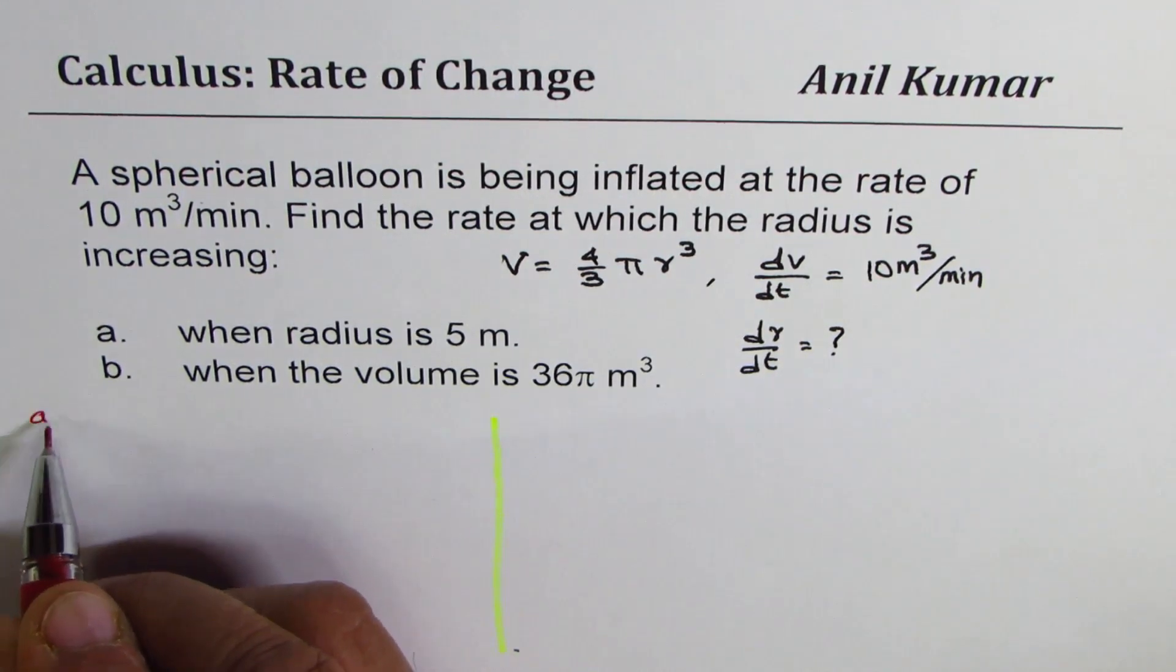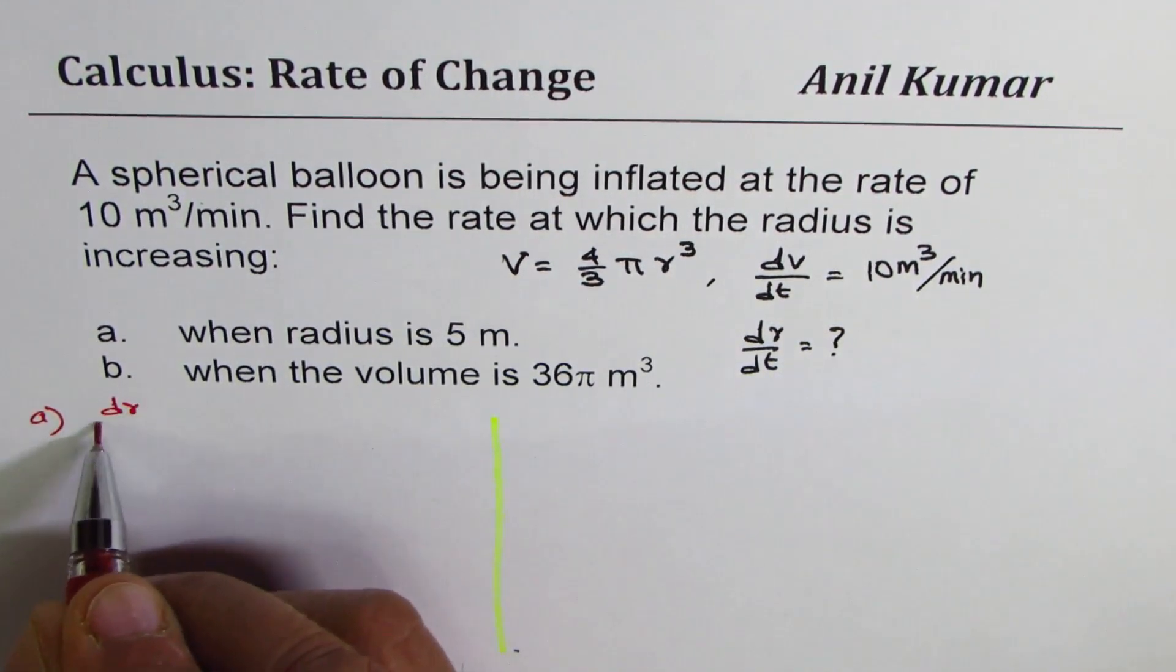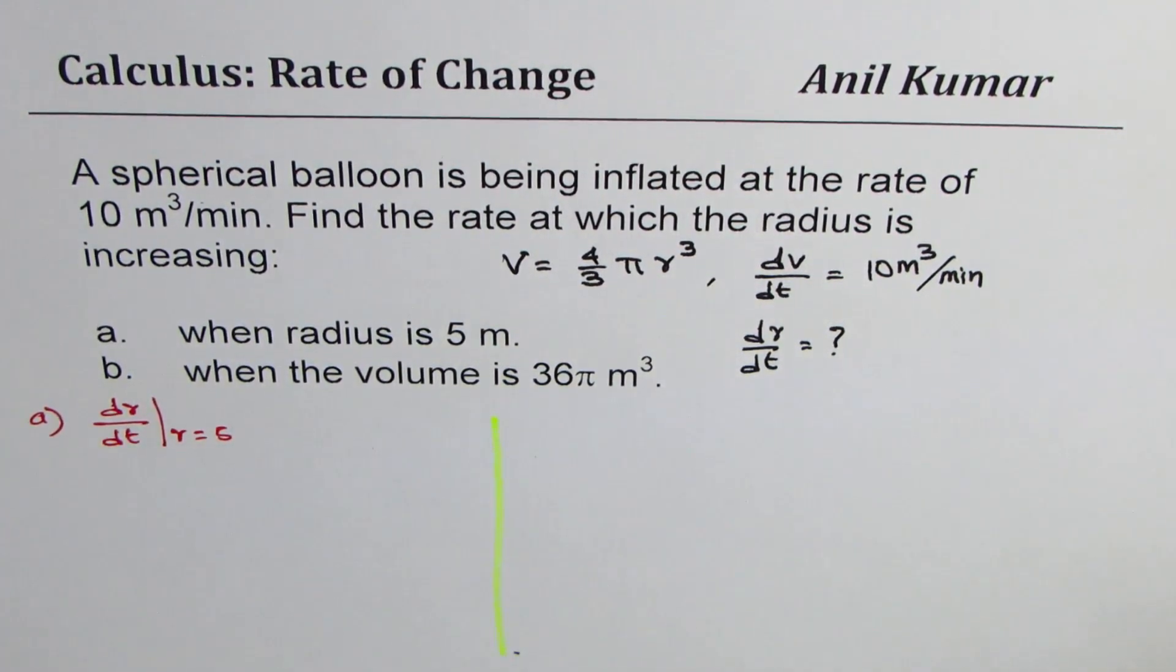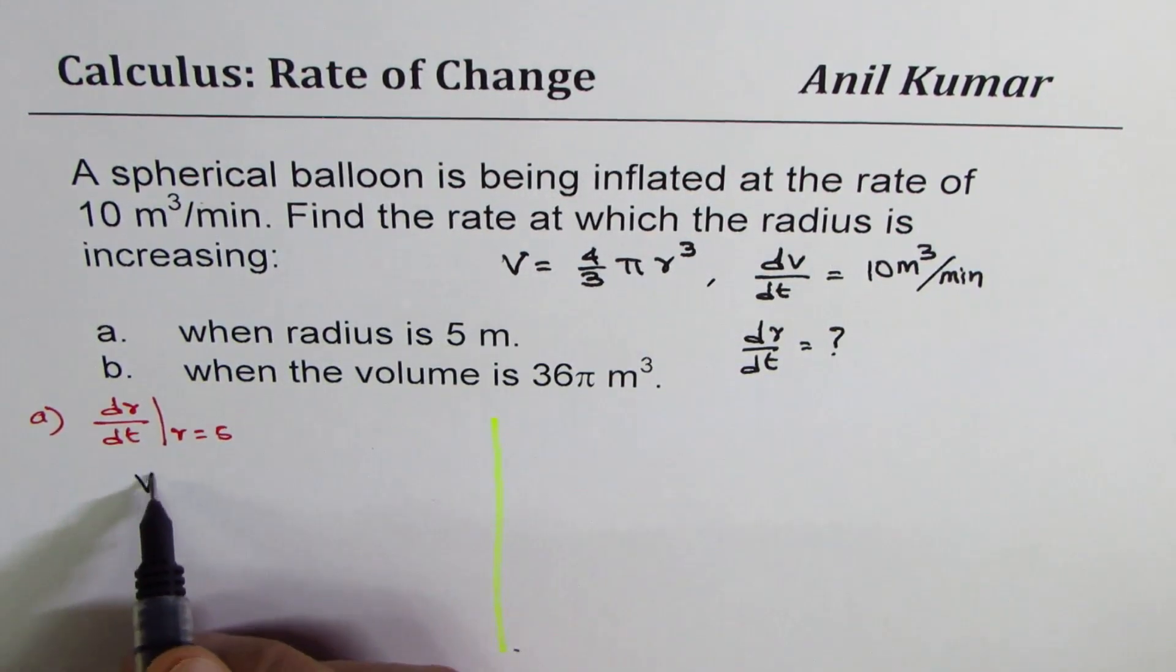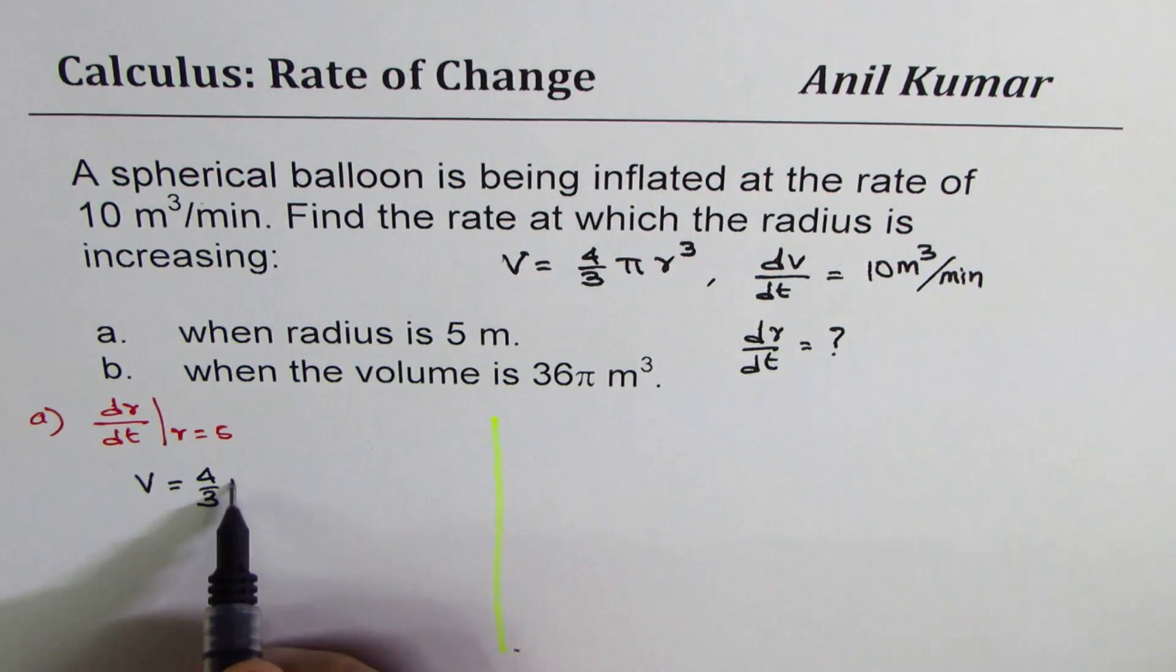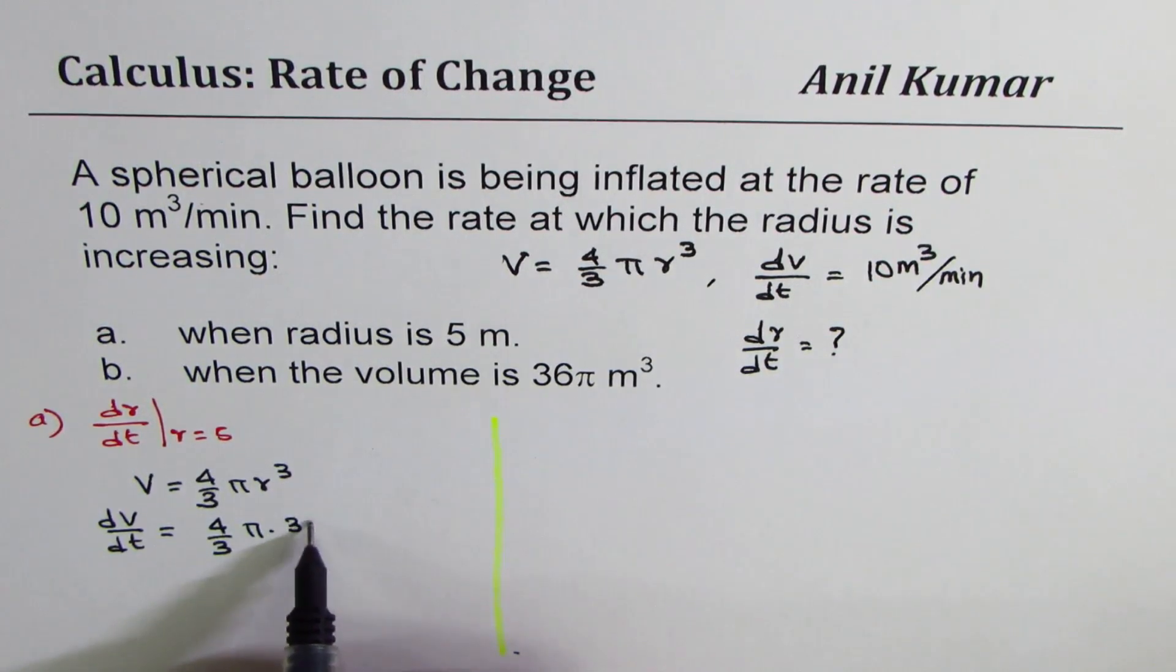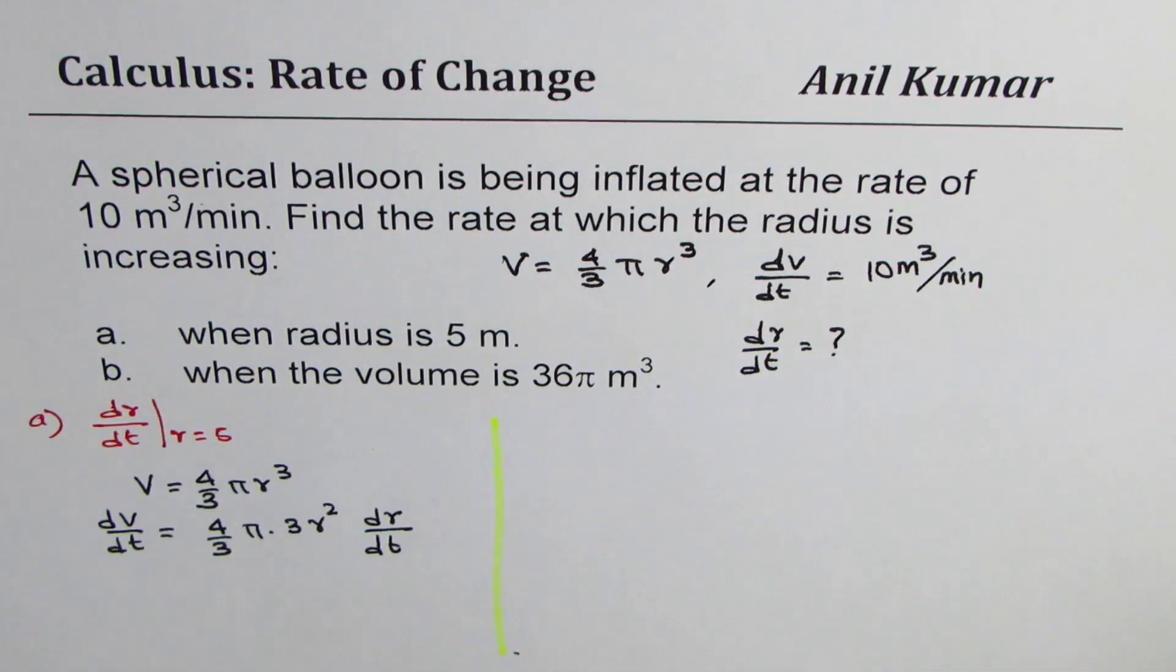So, part a, we want to find dr dt when radius is equal to 5. So let's begin with the formula, which is volume is equal to 4 by 3 pi r cube. Differentiating with respect to time, that is dv dt. So if you differentiate with respect to time, you get 4 over 3 pi, which is a constant. Applying the power rule, we get 3 r square dr dt. So differentiating both sides with time.